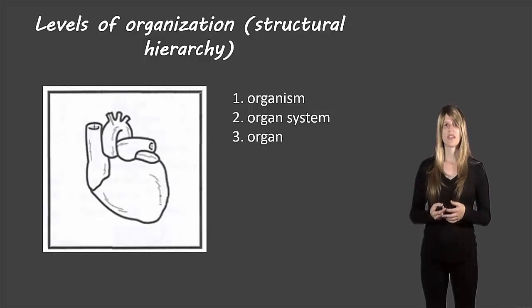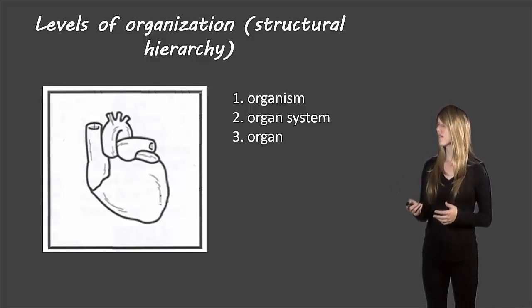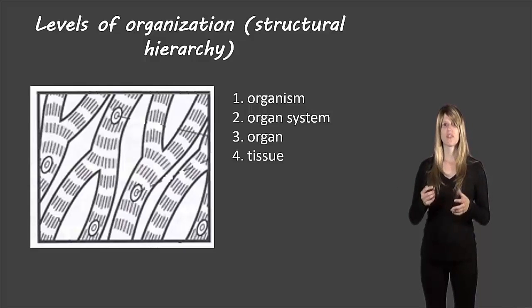Then we have organs. In this case the heart which is a little bit less complex. Then tissues. This is a type of muscular tissue called cardiac tissue which is inside of the heart and this is a little bit less complex than the heart itself.